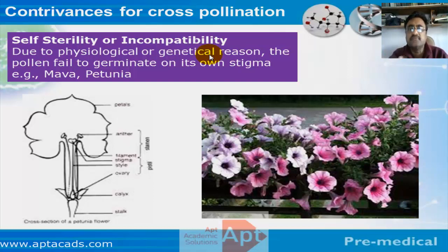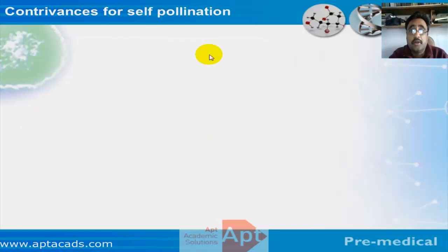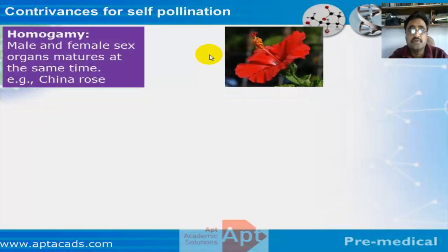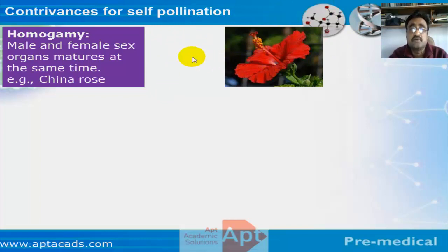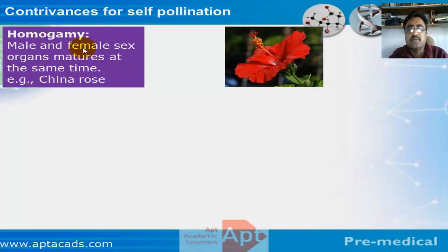Now let's discuss features that favor self-pollination. The typical example is china rose. In china rose, the male and female parts of the flower mature at the same time — we call this homogamy. Since both mature at the same time, the only option is self-pollination.